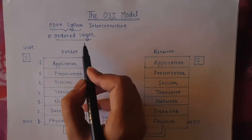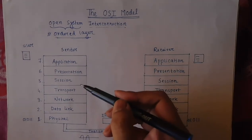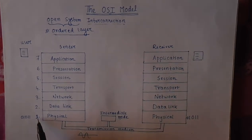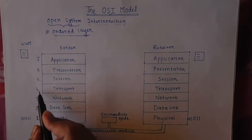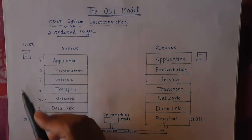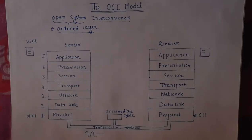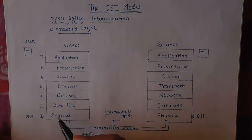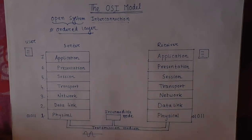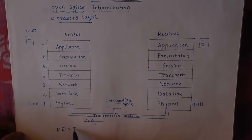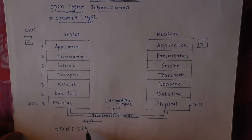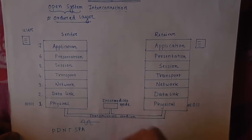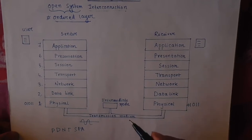The OSI model is built with seven ordered layers. It is called ordered because we cannot change the sequence of the layers. The layers are: Physical, Data Link, Network, Transport, Session, Presentation, and Application. To remember the sequence, take the first letters: P, D, N, T, S, P, A.